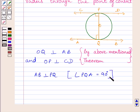Similarly, we can write CD is perpendicular to PQ since angle CPQ is equal to 90 degrees.